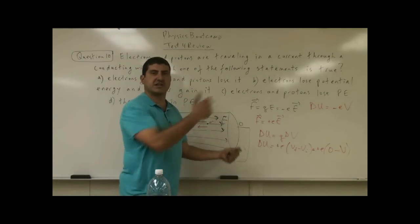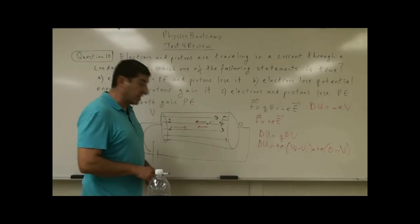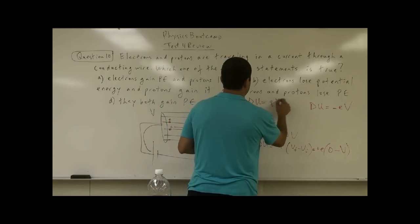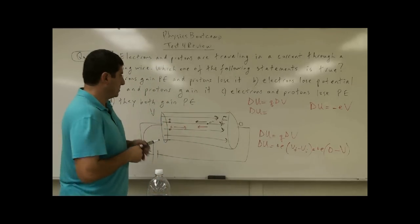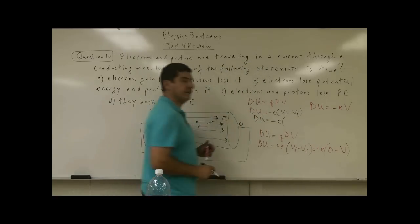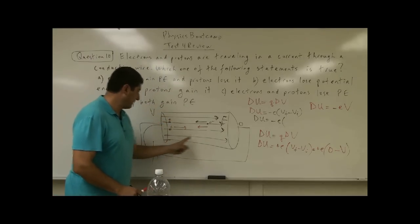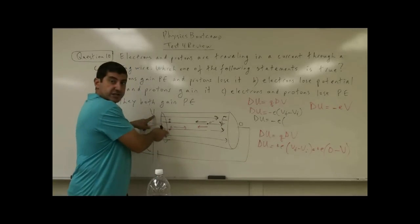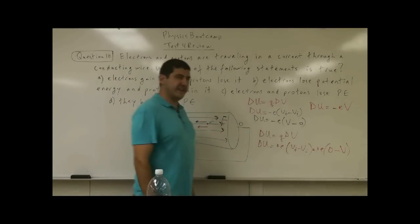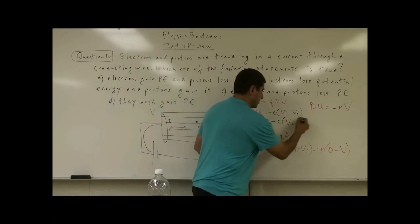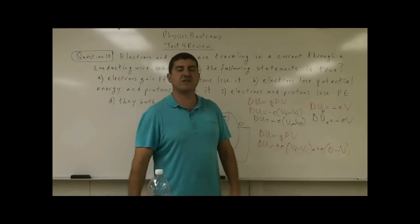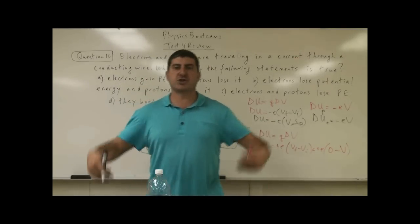Now what happens to the electron? Again ΔU = qΔV, but the charge of the electron is −e. The electron is headed toward the higher potential side, so V_final = V and V_initial = 0. Therefore ΔU = (−e)(V − 0) = −eV. So ΔU for the electron is also −eV, just like the proton. Both of them lose electrical potential energy.